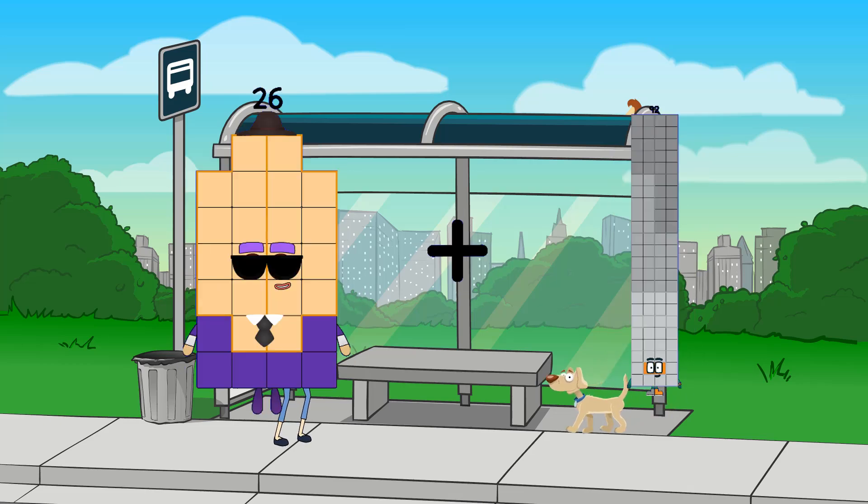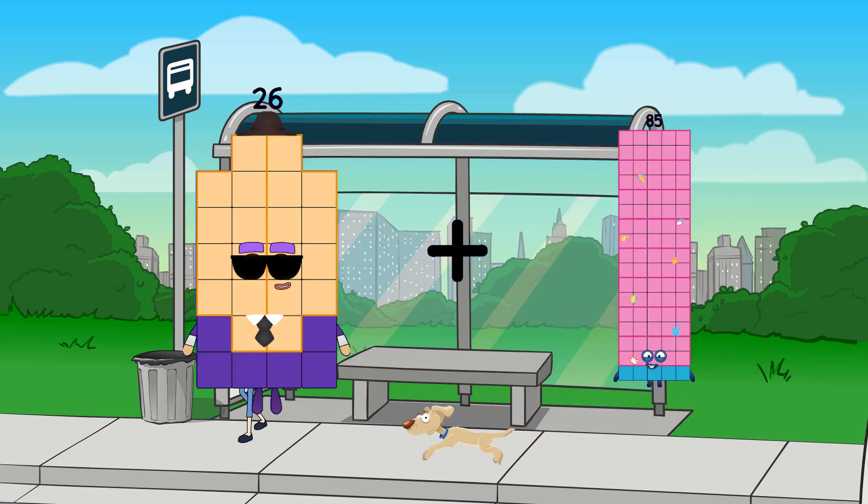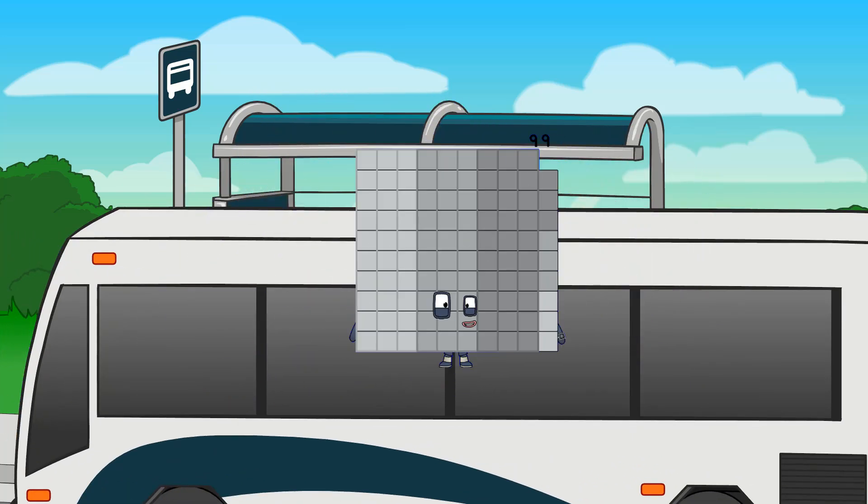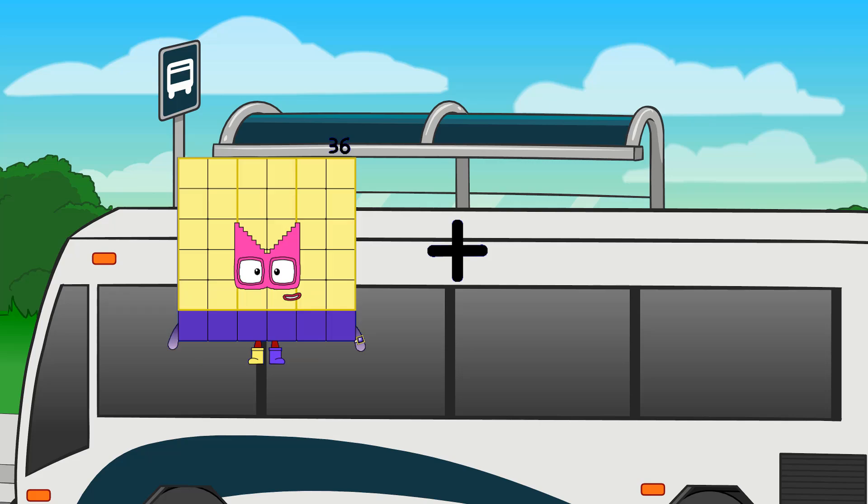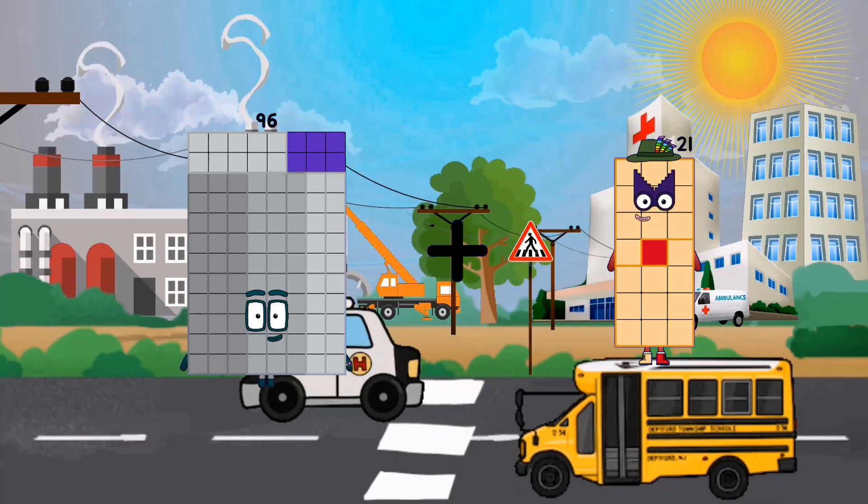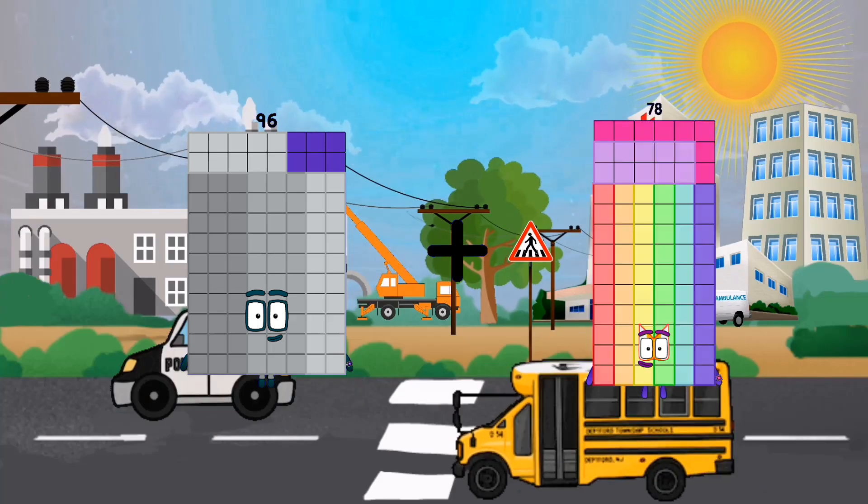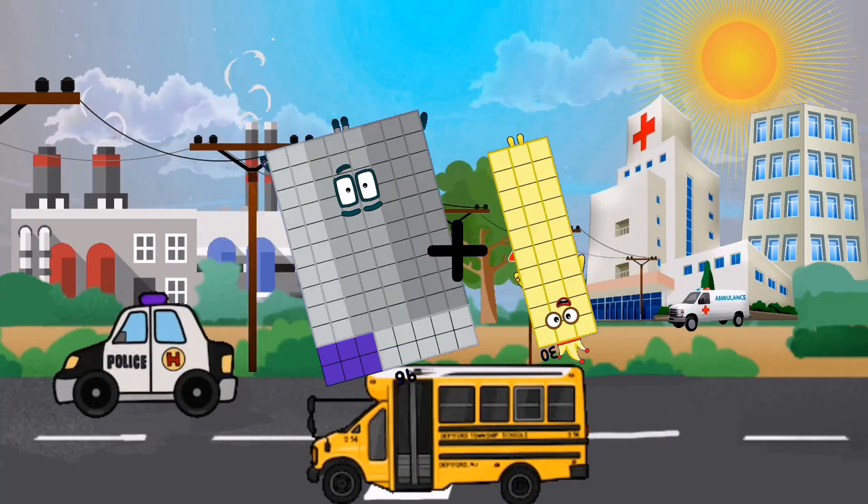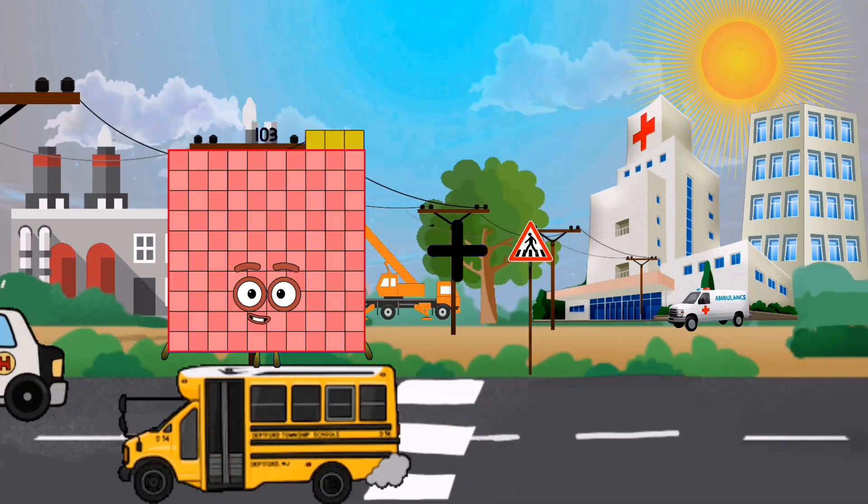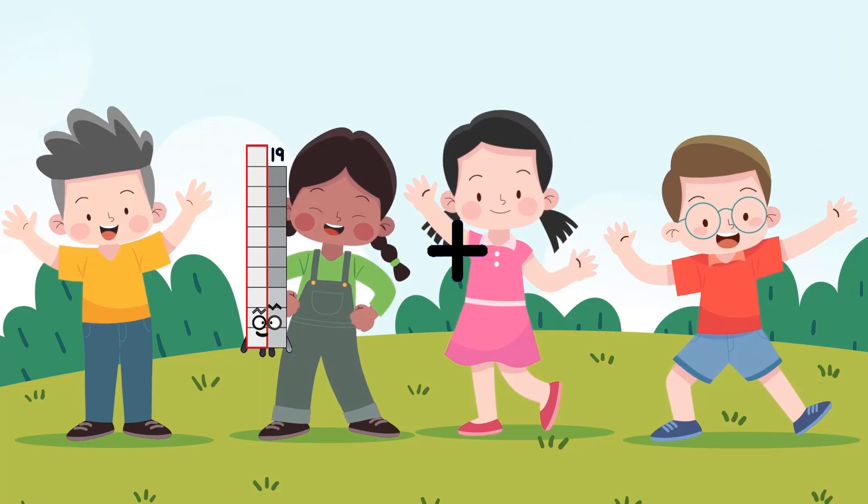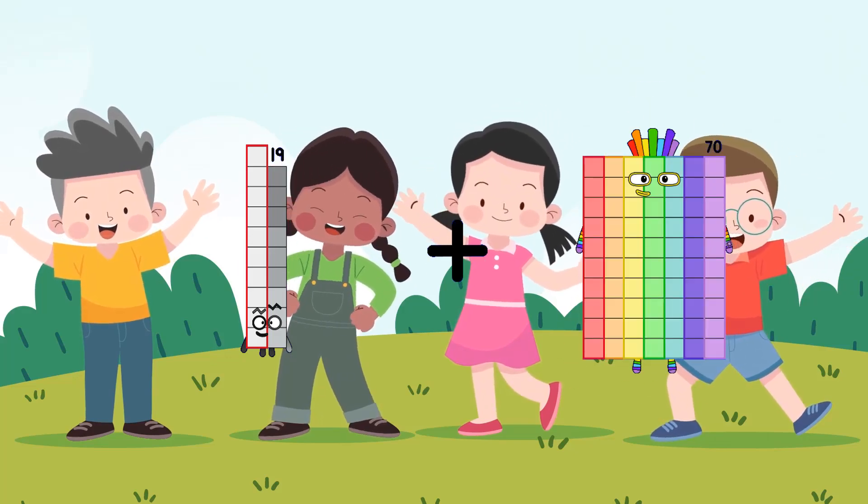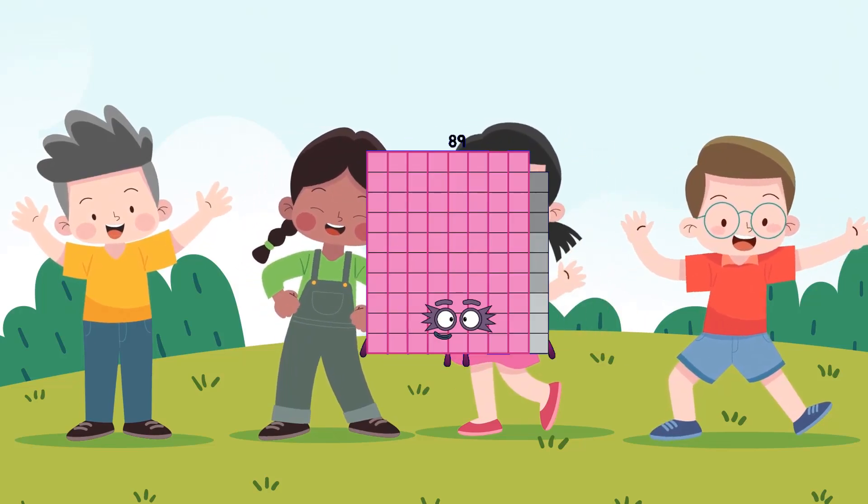126 plus 73 equals 99. 96 plus 30 equals 126. 19 plus 70 equals 89.